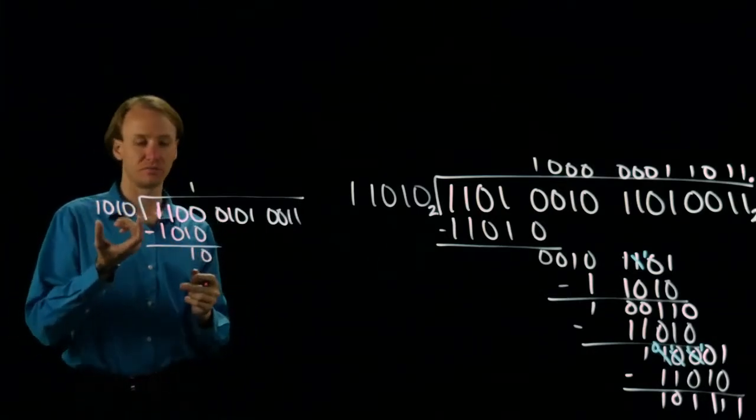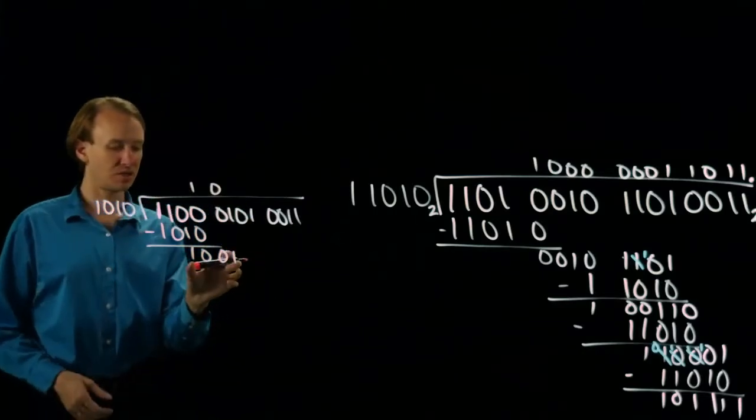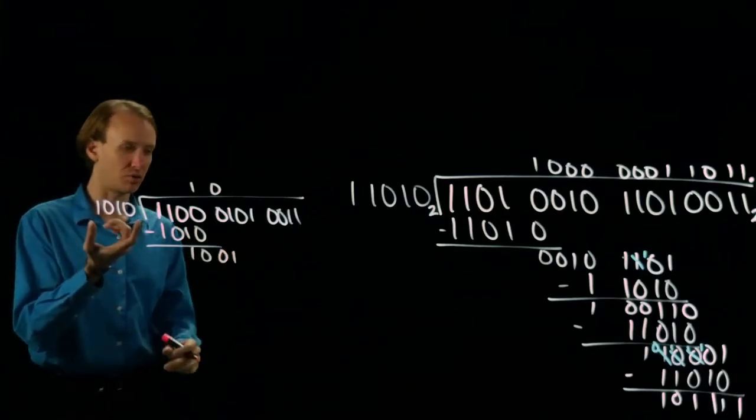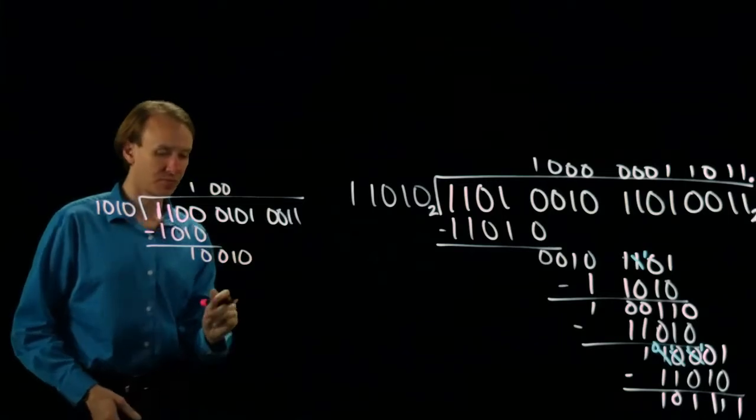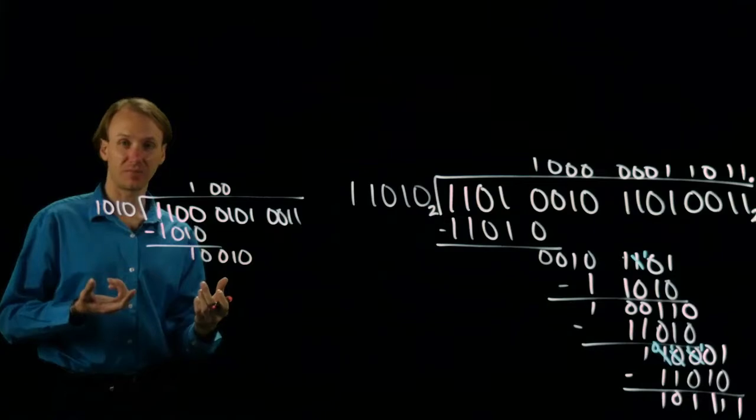Now I need to pull down bits until I've got at least four. But this four-bit binary number is smaller than this four-bit binary number, so I'll pull down another bit. Now I have a five-bit binary number, which is certainly larger than my four-bit binary number.